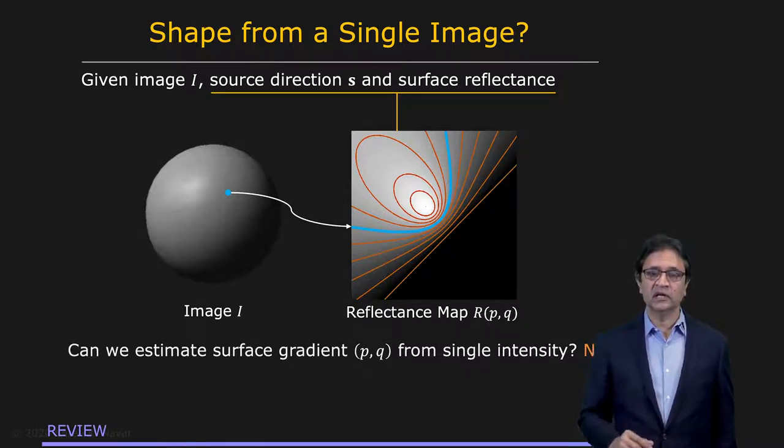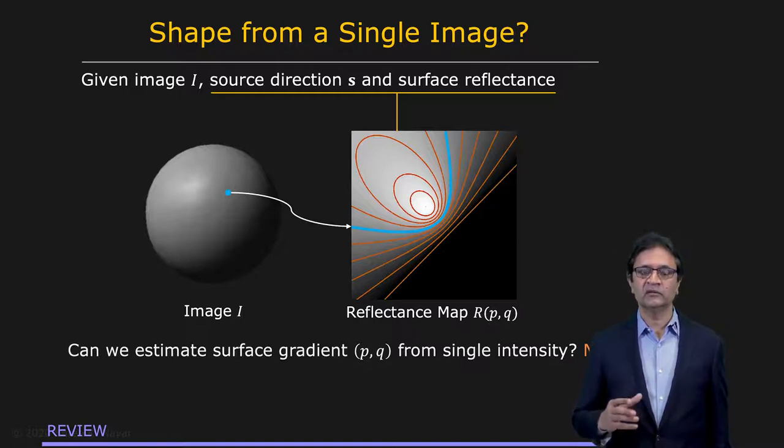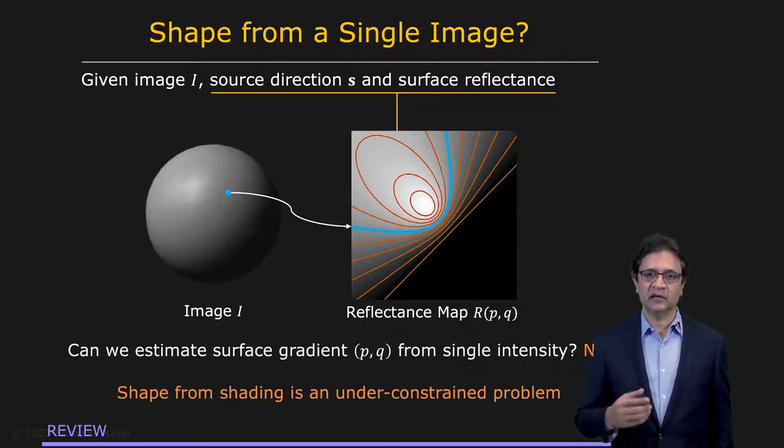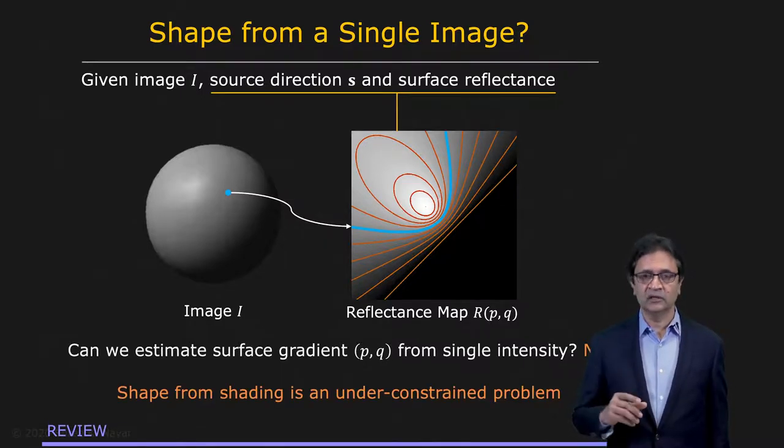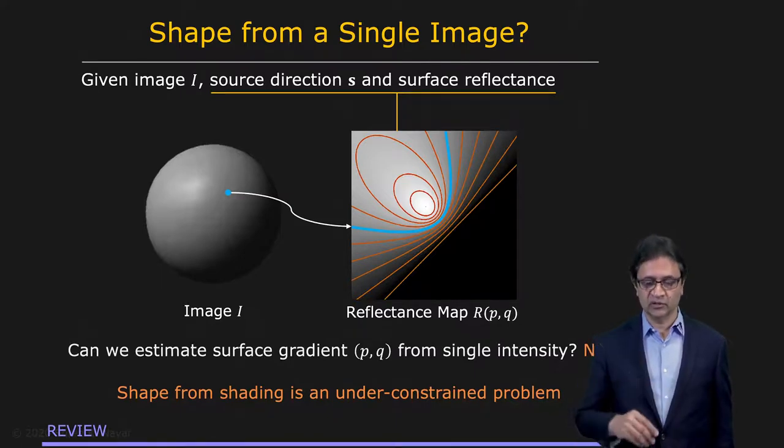So all this to say that the problem of recovering three dimensional shape from a single shaded image is a severely under constrained problem. And so our goal here is to actually find ways to constrain the problem and then solve it.